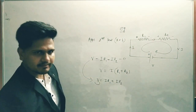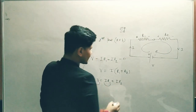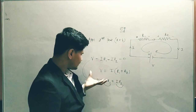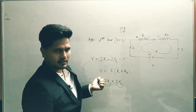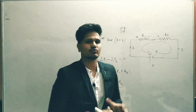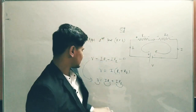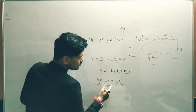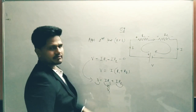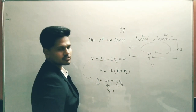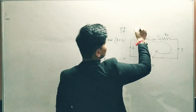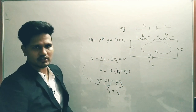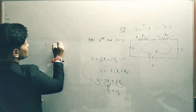So V is the EMF of the battery, IR1 is the potential drop across the first resistor, and IR2 is the potential drop across the second resistor. This equation means the total potential of the battery equals the sum of the potential drops across various resistors. Let me denote V1 = IR1 and V2 = IR2, so we can write V = V1 + V2.